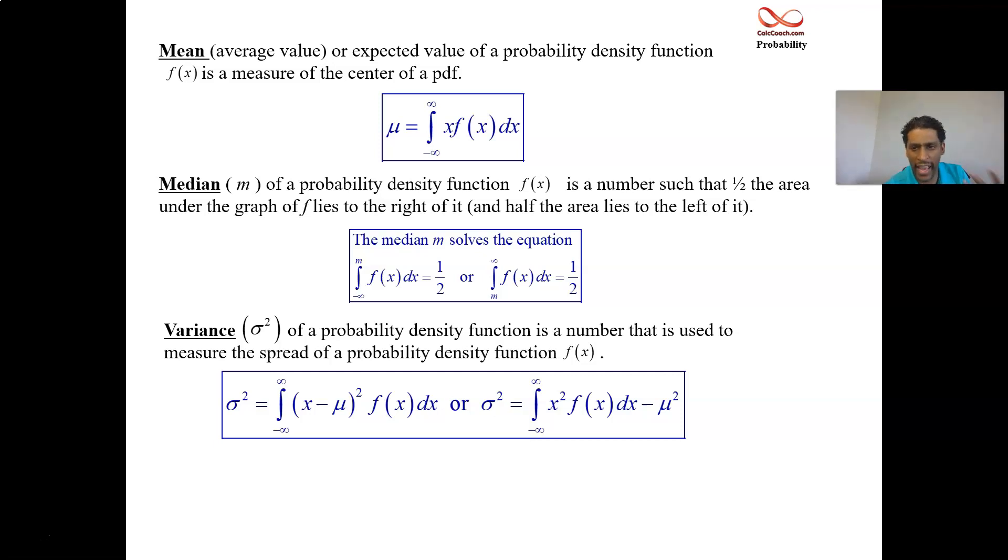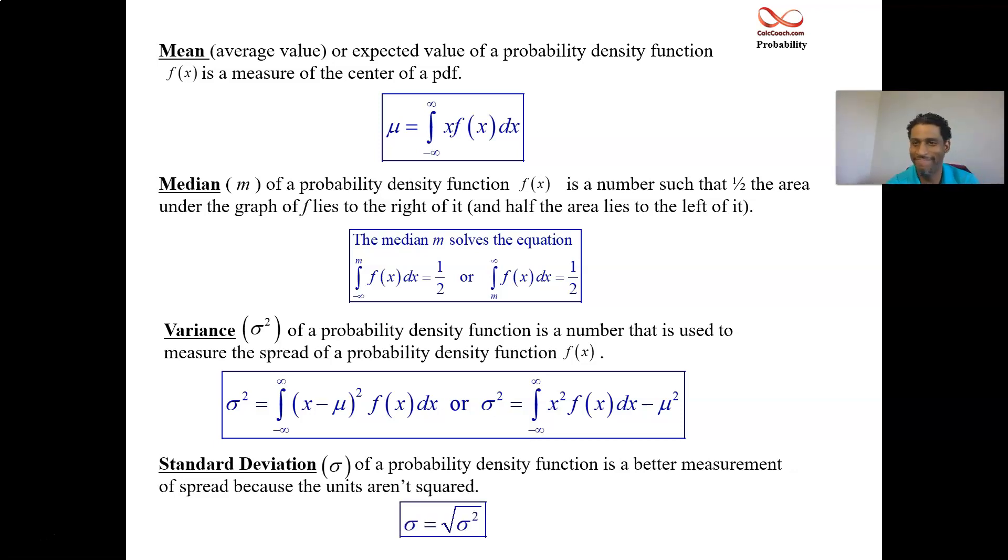So to get right back into the correct unit, we should take a square root. And that's where standard deviation comes in. The square root of variance is going to be standard deviation. It feels weird to put a square root over an integral. So first calculate variance and then just take its square root.